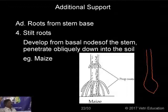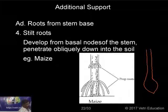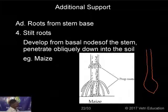Next, stilt roots, also called supporting roots, develop from the stem base. Generally, plants growing in loose soils need extra support. From each node, extra roots develop and bend obliquely downwards to give extra support. Example: maize. You can also find stilt roots in pandanus.